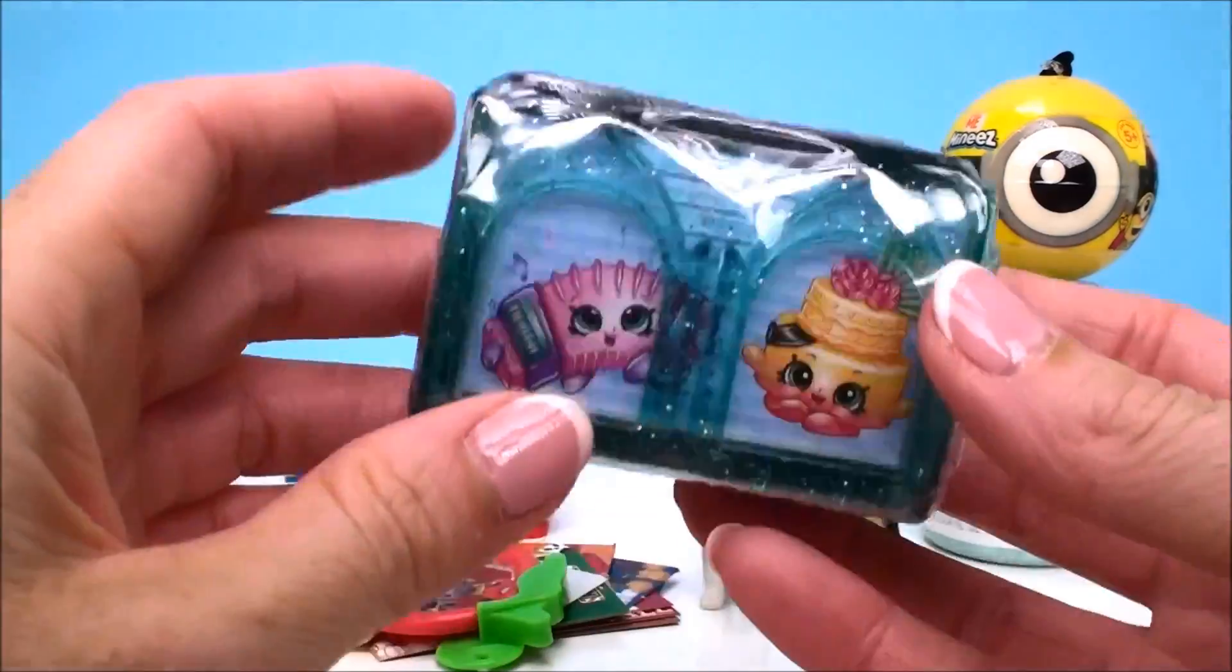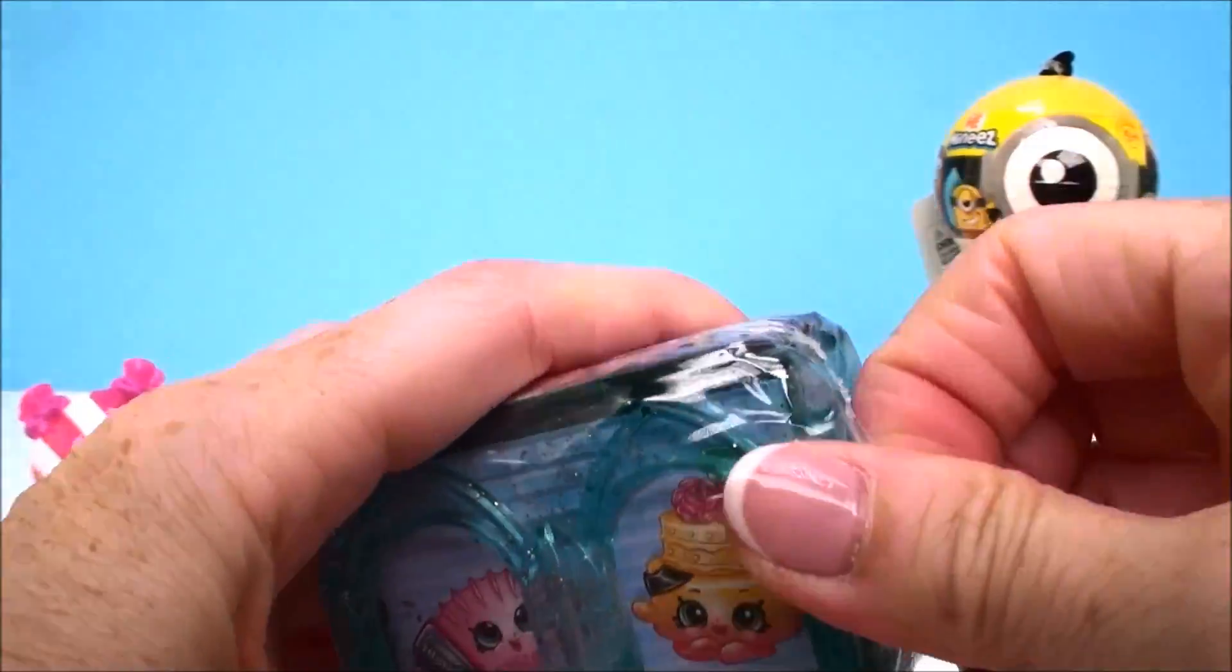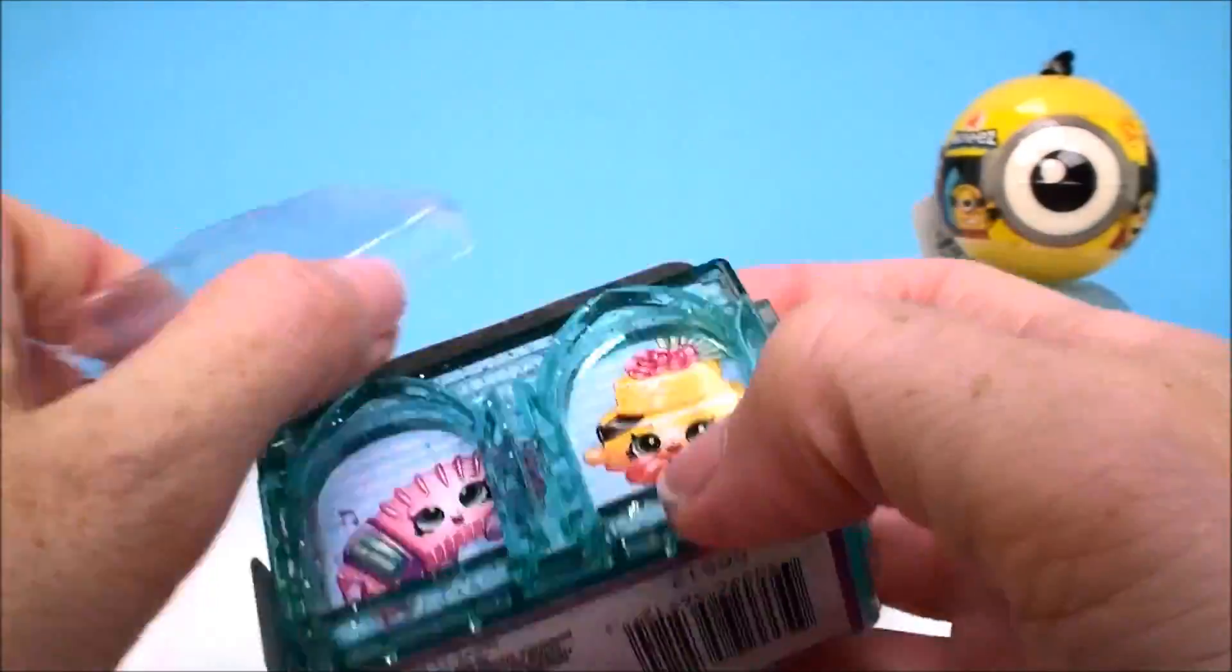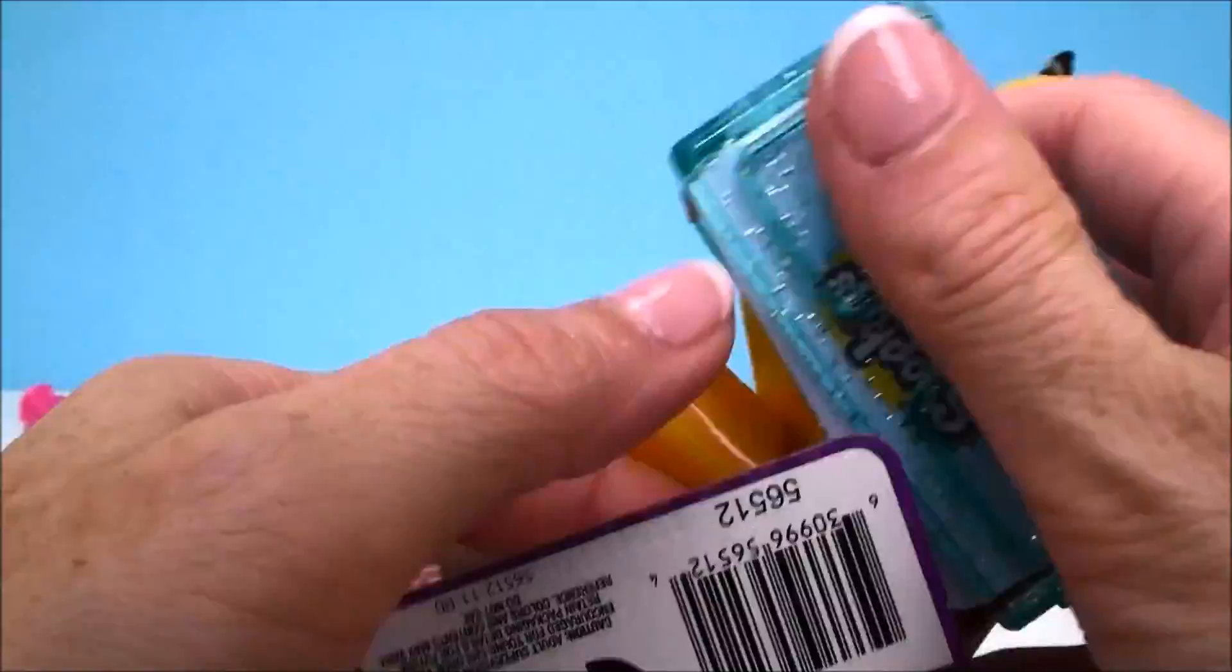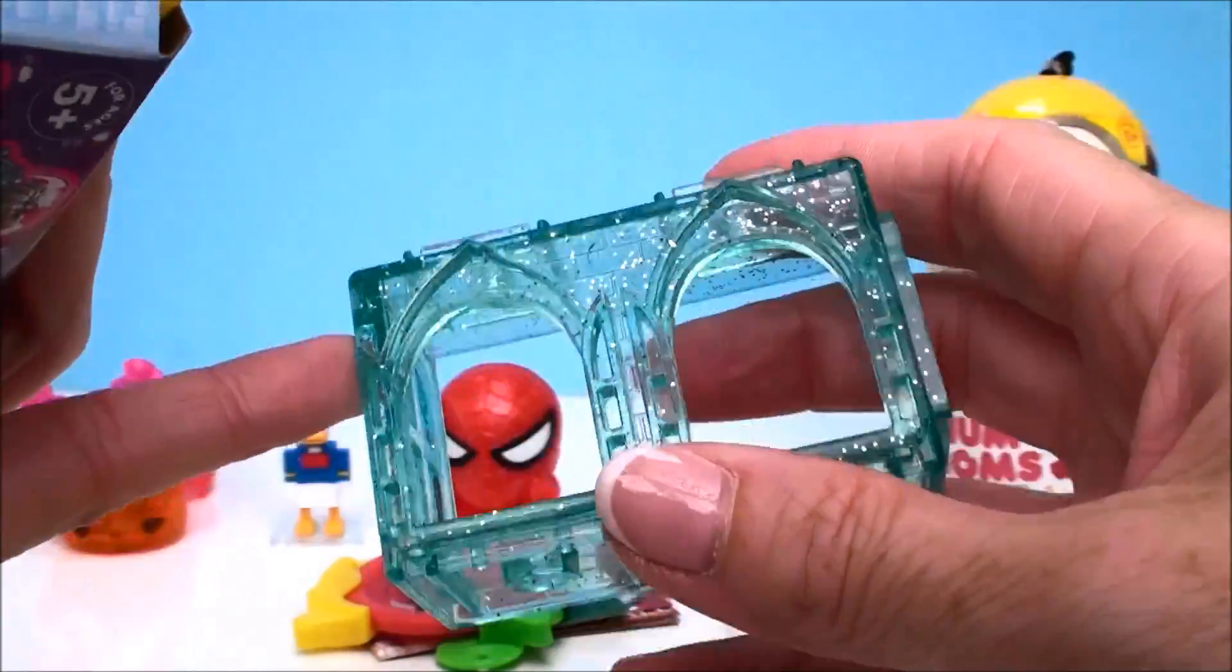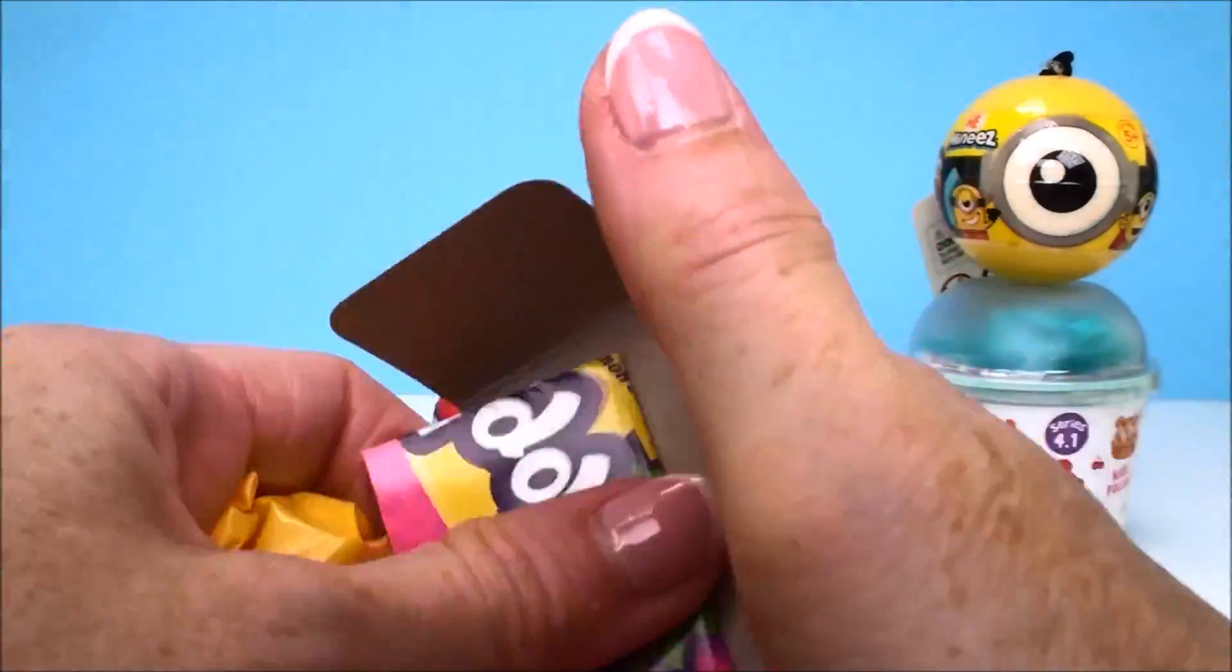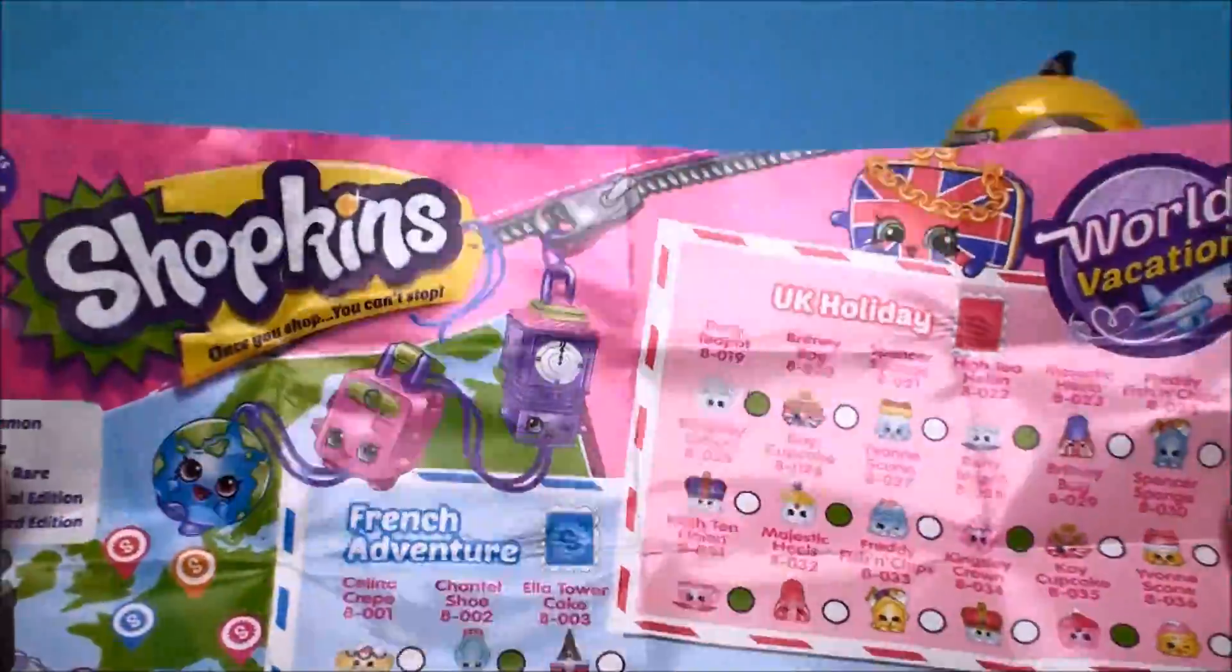And next we have our Shopkins Season 8 brought to Europe from the World Vacation. I just love this new series. So cute. Or new season I should say. And it comes in a twin room. And of course as always you get two Shopkins inside. So this is the little twin room and as you collect these you can actually attach them to one another on the top and on the sides or on the bottom. And you can stack them up and make a nice big house out of them. Really cute.